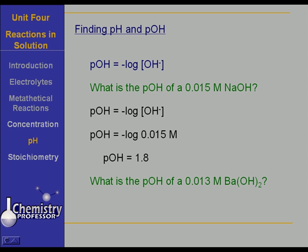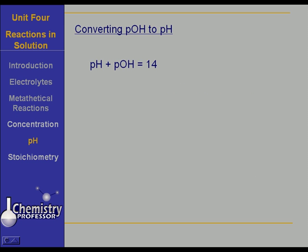What's the pOH of a 0.013 molar barium hydroxide? You're going to have to look at the hydroxide ion concentration and consider barium hydroxide as a strong base. Therefore, the concentration of the hydroxide ion, because there are two in each barium hydroxide, is 0.026 molar. So the pOH is 1.6. Now, converting pOH to pH — you have to remember that pH plus pOH is equal to 14. That will be explained in a later unit.